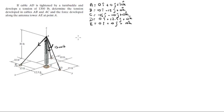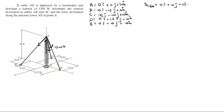Let's find some unit vectors. The easiest unit vector to find is unit vector EA, because it just goes straight up, which means it is 0i + 0j + 1k. That's the first unit vector we found already — only three to go.